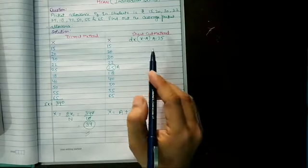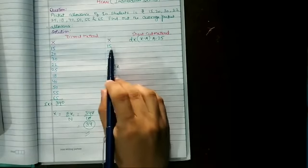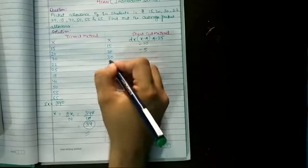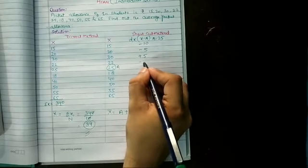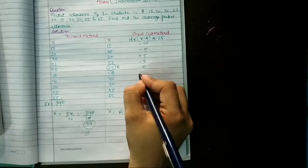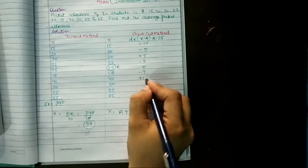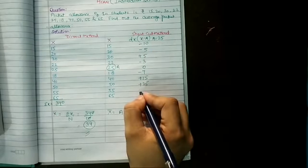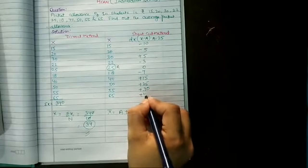We will find out dx, which is x minus A. 15 minus 25 equals minus 10; 20 minus 25 equals minus 5; 30 minus 25 equals plus 5; 22 minus 25 equals minus 3; 25 minus 25 equals 0; 18 minus 25 equals minus 7; 40 minus 25 equals plus 15; 50 minus 25 equals plus 25; 55 minus 25 equals plus 30; 65 minus 25 equals plus 40.